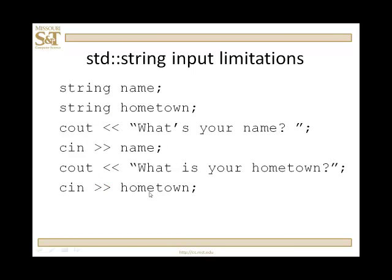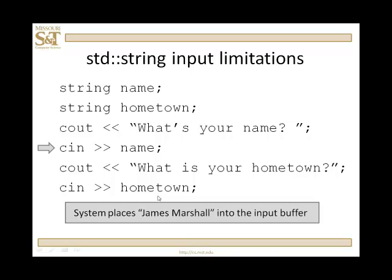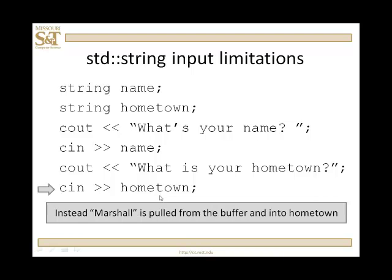More limitations. Suppose we have 'string name' and 'string hometown'. Prompt for your name, read it in, then a prompt for hometown. Suppose you enter 'James Marshall' — James Marshall goes into the input buffer, James is copied into the variable 'name', and Marshall remains in the buffer. Then you get a prompt for hometown, but the system does not wait for user input. Marshall is pulled off the buffer and placed into the variable 'hometown'. You didn't have any choice. So sometimes you'll get very funny behavior when using strings and the extraction operator mixed with getline.